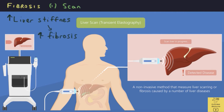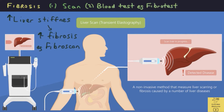One such scan is the FibroScan. Another test is a blood test which measures scarring by checking for markers of fibrosis — one such test is the FibroTest. A newer non-invasive method is called MRE or magnetic resonance elastography, which uses an MRI scan to look for fibrosis.